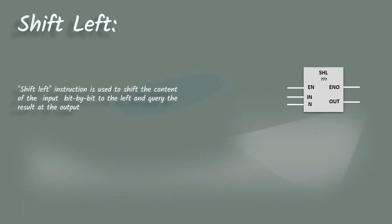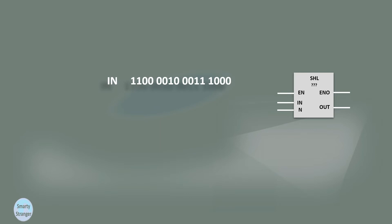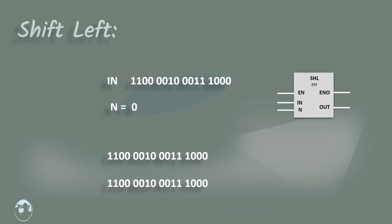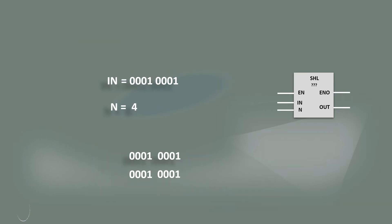Our next instruction is the shift left instruction. Shift left is used to shift the content of the input bit by bit to the left and query the result at the output. Consider an example: we apply some value at input and N is 0, so the same value is copied to the output. In another example, N is 4, meaning we have to shift 4 bits to the left.